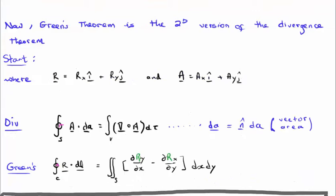I have written the two theorems on the bottom of your screen. First looking at the divergence theorem: if we take the anti-clockwise closed surface integral of the vector field capital A dotted with the vector area dA, that's equivalent to calculating the volume integral of the divergence of A. If we look at Green's theorem, where we take the closed line integral of a vector field capital R with the infinitesimal line segment dl, it's equivalent to calculating the surface integral of ∂R_y/∂x minus ∂R_x/∂y.